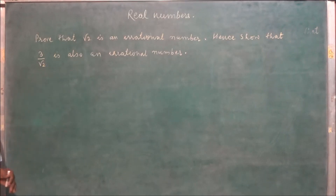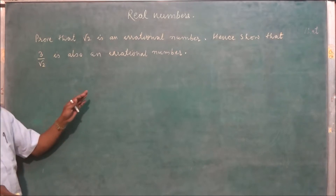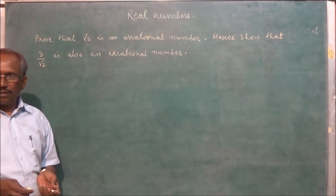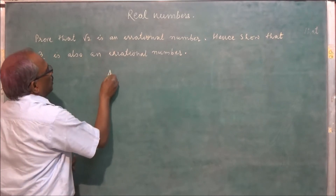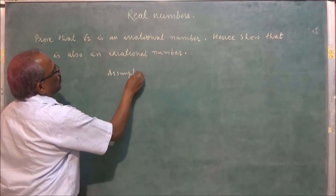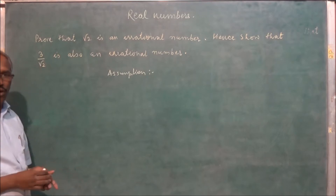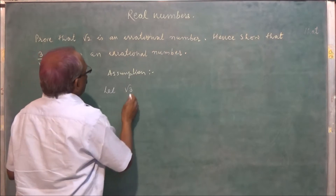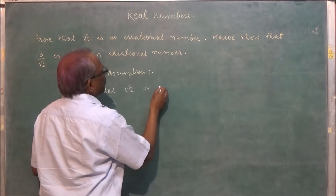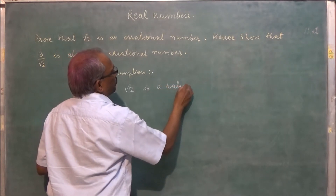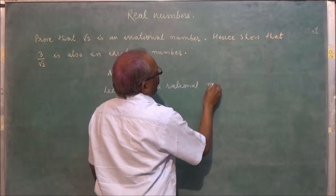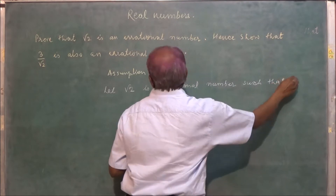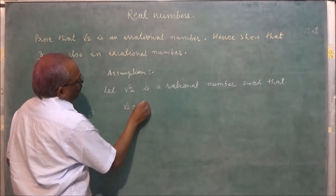Let us see one more important question: prove that root 2 is an irrational number. Let us show that root 2 is also an irrational number. So we will write here our assumption that root 2 is a rational number, such that root 2 is equal to a upon b.